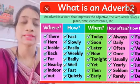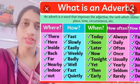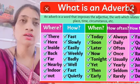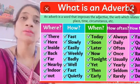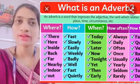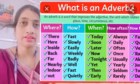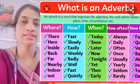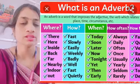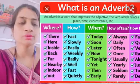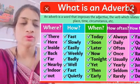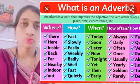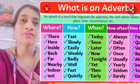Matlab jo bhi words humein batate hain ki koi bhi action kab hua, kahan hua, kaise hua, aur kitni baar hua — woh Adverbs hote hain. Ab jaise 'when' mein kaun kaun se words aate hain — when mein jaise after, before, early, now, since, soon, today, tomorrow — yeh 'when' mein aate hain.